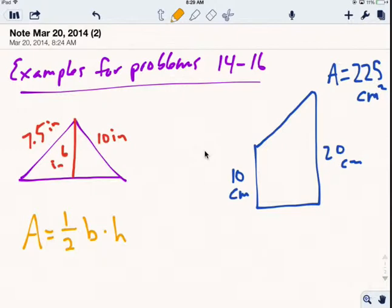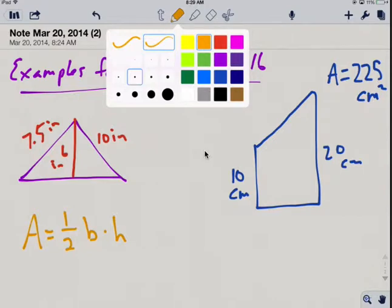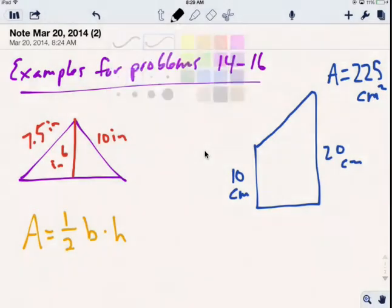In number 14, this is a multi-step problem. They're asking us to find the area of this triangle. Looking at the triangle, we can see they gave us the height—this red line from top to bottom—which is 6 inches. But we don't have the base.